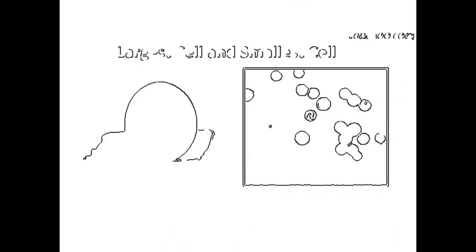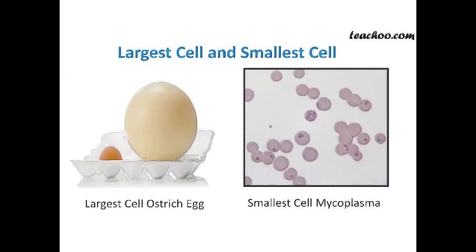The size of cells also varies greatly. Here we discuss the most important exam questions: largest, smallest, and longest. The largest cell is the egg cell of the ostrich, with a diameter of 18 cm — the ostrich bird's egg cell is considered the largest cell. The smallest cell is mycoplasma. The longest cell is the nerve cell — the nerve cells found in the human brain are considered the longest cells.